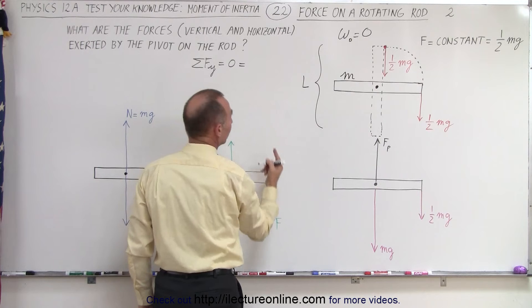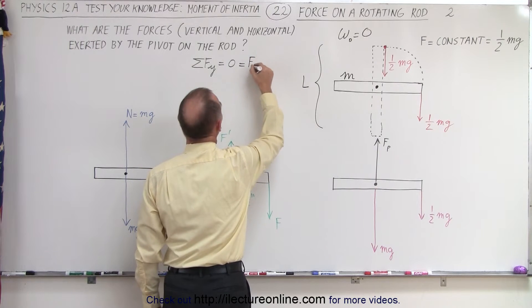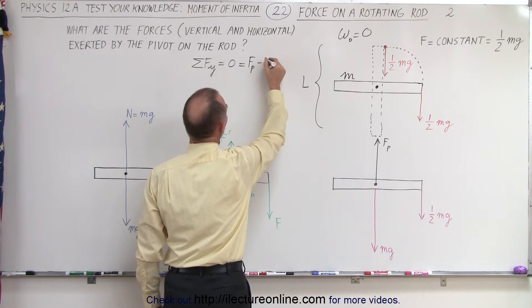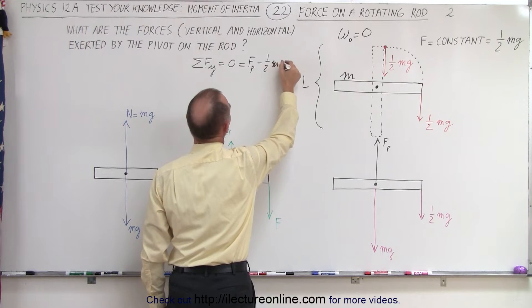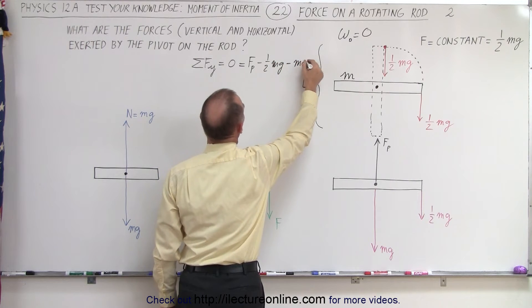So, therefore, we can say that this is the force of the pivot in a positive direction, minus one-half mg and minus mg.